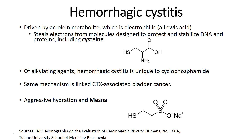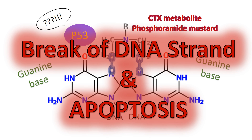To prevent hemorrhagic cystitis, we use aggressive hydration and we also give a drug called mesna. Mesna has a sulfur group on the end, similar to our cysteine molecule, so the acrolein metabolite has more places to bond to and is less likely to bond to the cysteine. With aggressive hydration, we're tying up the electrophilic acrolein metabolite with water and flushing it out of the bladder. So we keep the bladder regularly flushed while keeping some acrolein occupied with mesna.